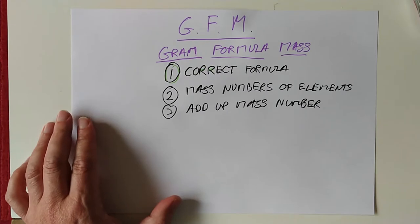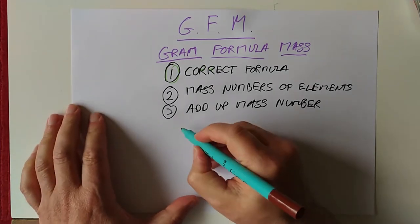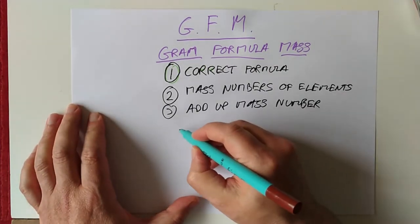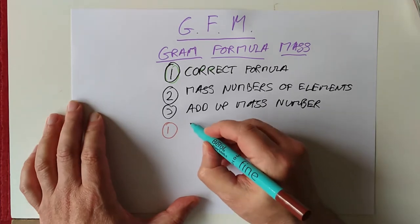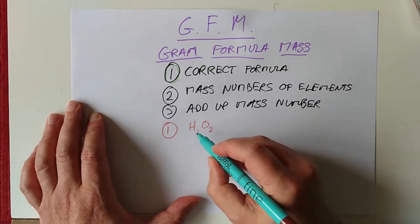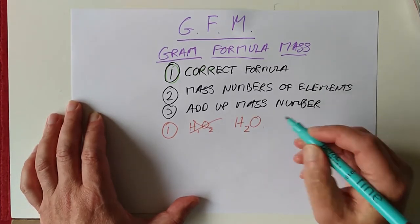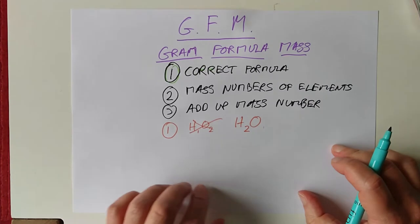Let's do an example. Let's do an example of a GFM of a compound. Let's pick water. Okay, nice and simple. So if we are doing H2O, stage 1, we need the correct formula. Hydrogen, valency 1, oxygen, valency 2. Swap them over and you get H2O1. We're lazy, so we don't usually write the 1 in, but it's still there.